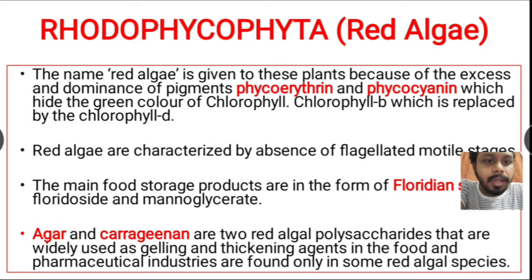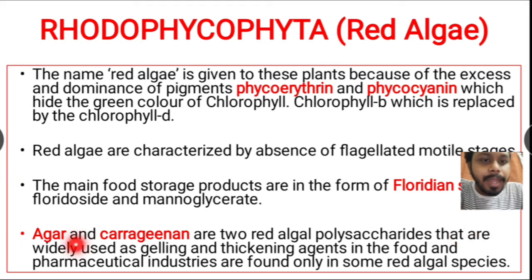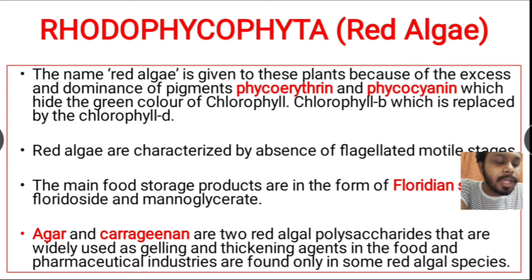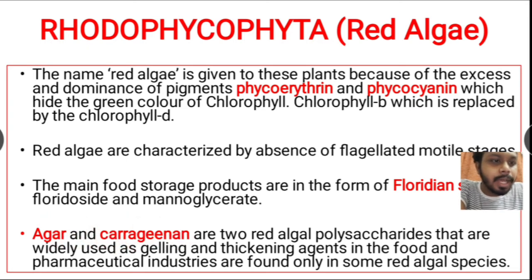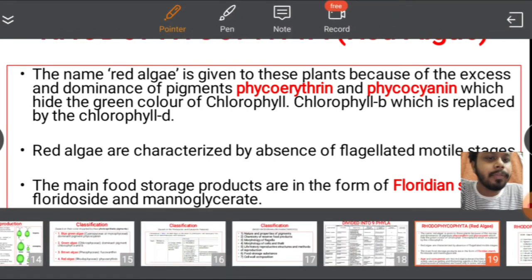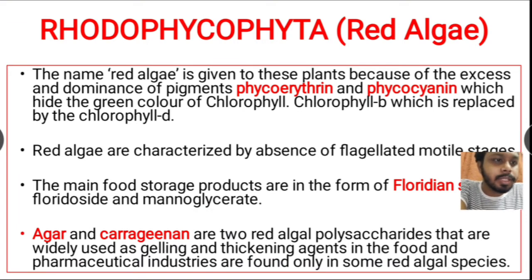Agar and carrageenan are two red algal polysaccharides that are widely used as gelling and thickening agents to produce microbiological or algal media. These two polysaccharides are also used in the food and pharmaceutical industries and are found only in red algae.